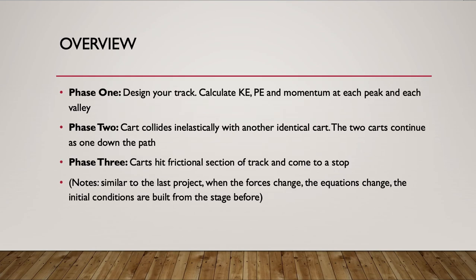The first part is you get to design your own track. There are a couple of initial conditions you need to meet, listed on the assignment. You need at least two peaks and two valleys. Your launching point can be your first peak. Just make sure you clearly indicate which peaks and valleys you're using for analysis, and then you'll find the kinetic energy, potential energy, and momentum for each of those two peaks and two valleys.